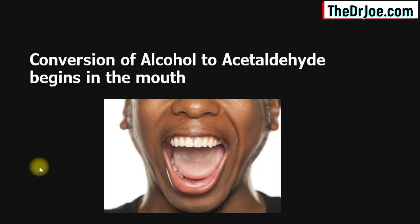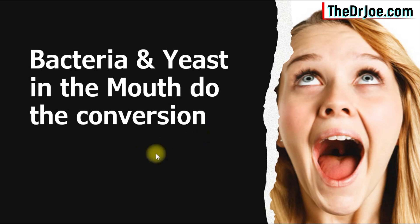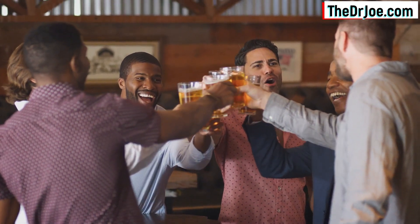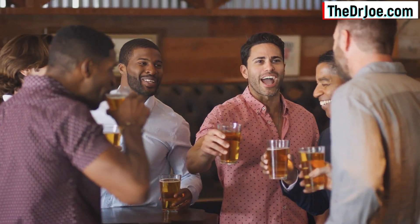How does acetaldehyde come about? Acetaldehyde is formed from alcohol through a conversion that begins in the mouth. As soon as the alcohol lands in your mouth, the conversion process begins and you end up with acetaldehyde as a metabolite. The bacteria and the yeast in your mouth do the conversion. And the longer the alcohol lasts in your body, the more acetaldehyde that is produced. So if you consume a lot of alcohol, you're going to end up with a lot more acetaldehyde because it's going to take longer for your body to get rid of the alcohol.